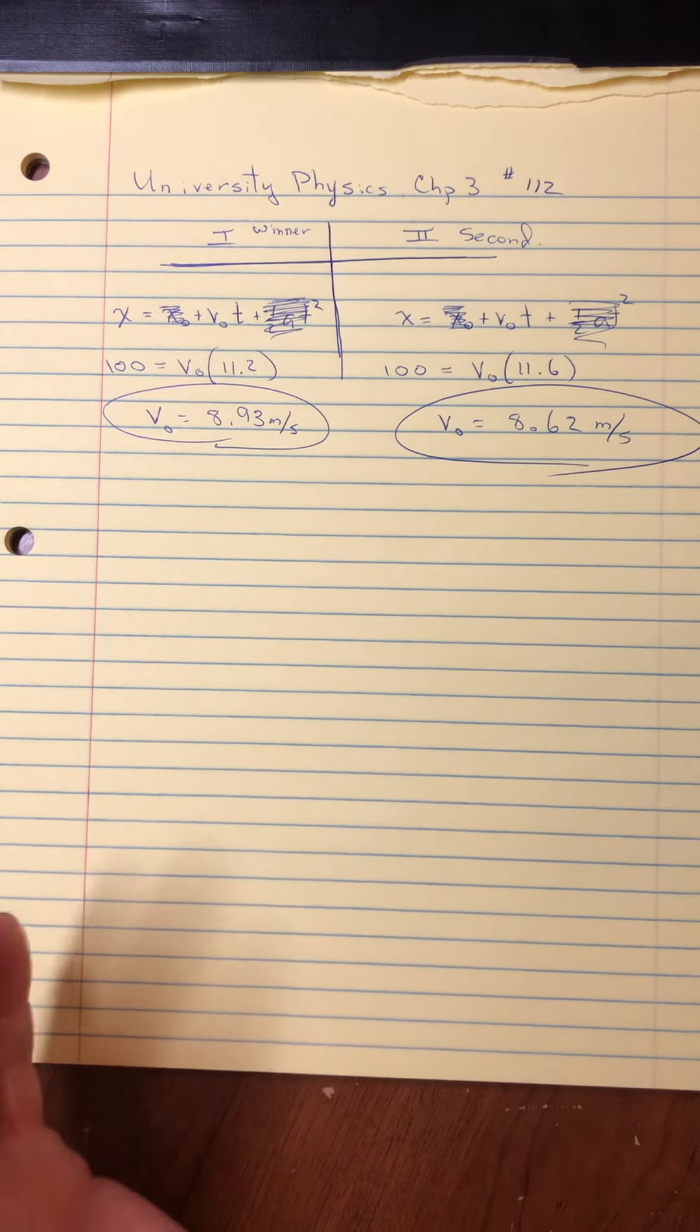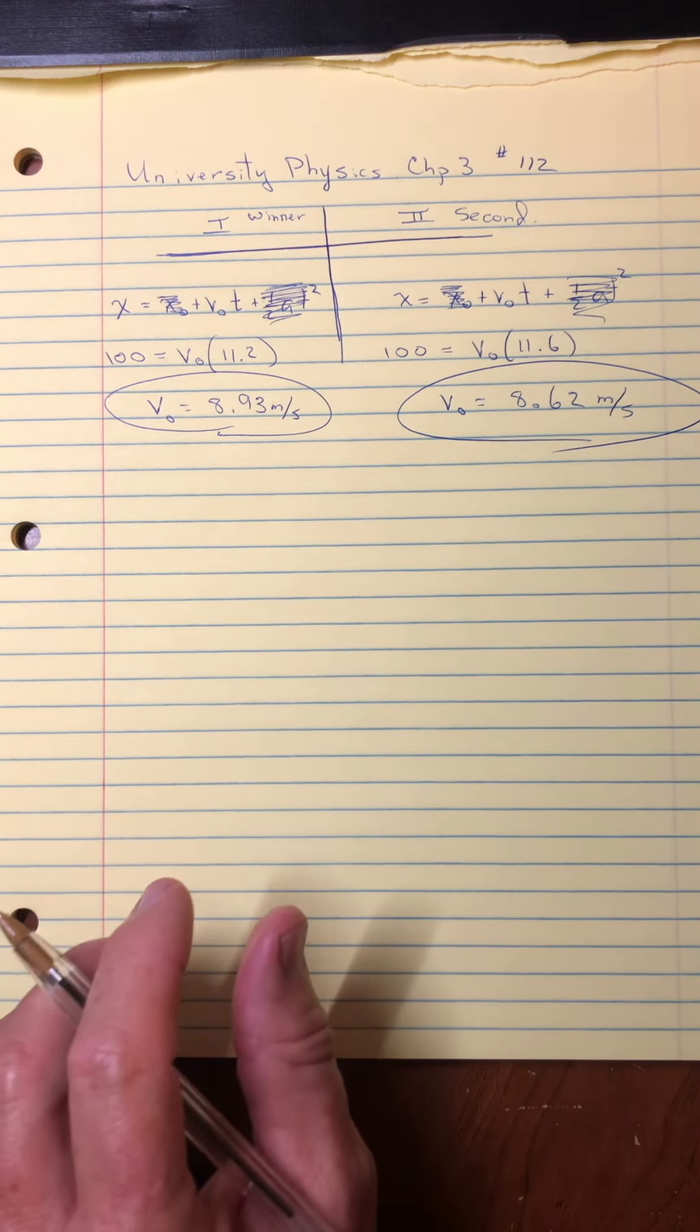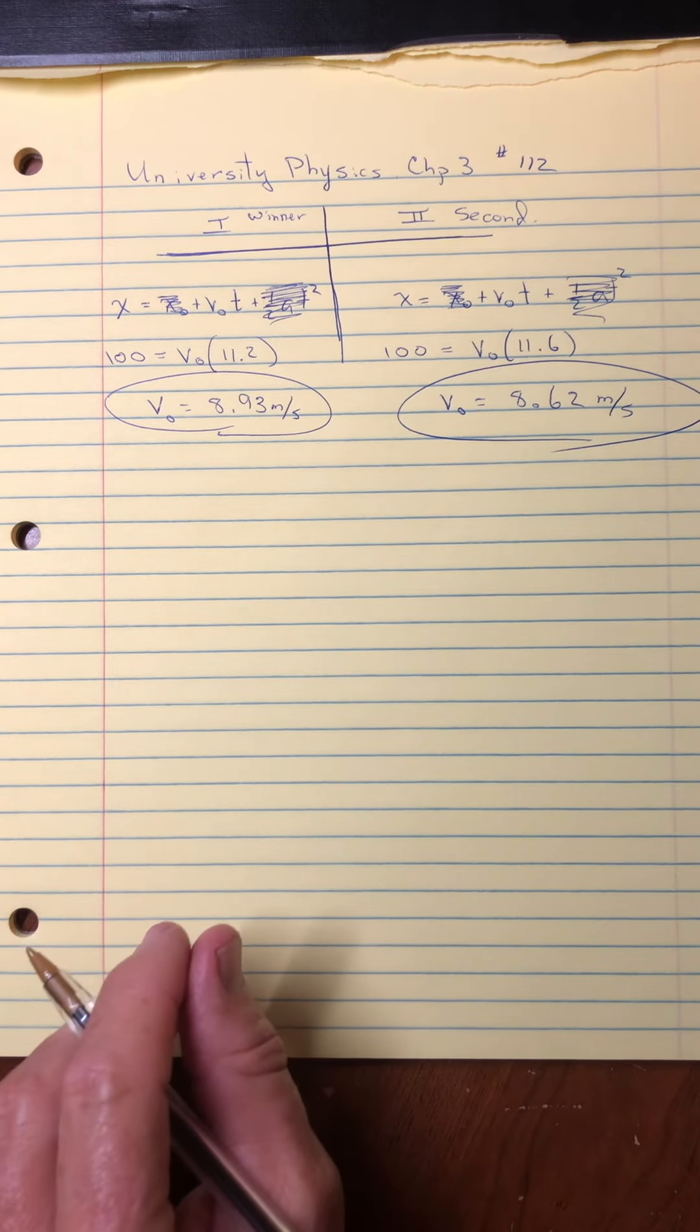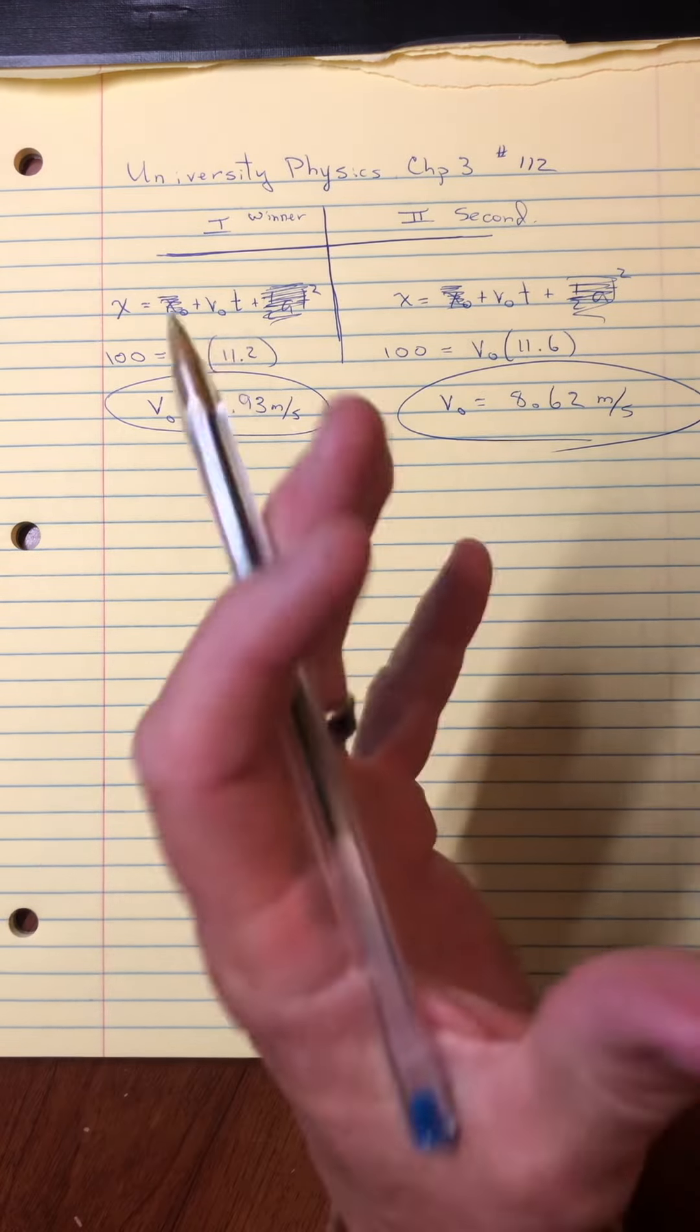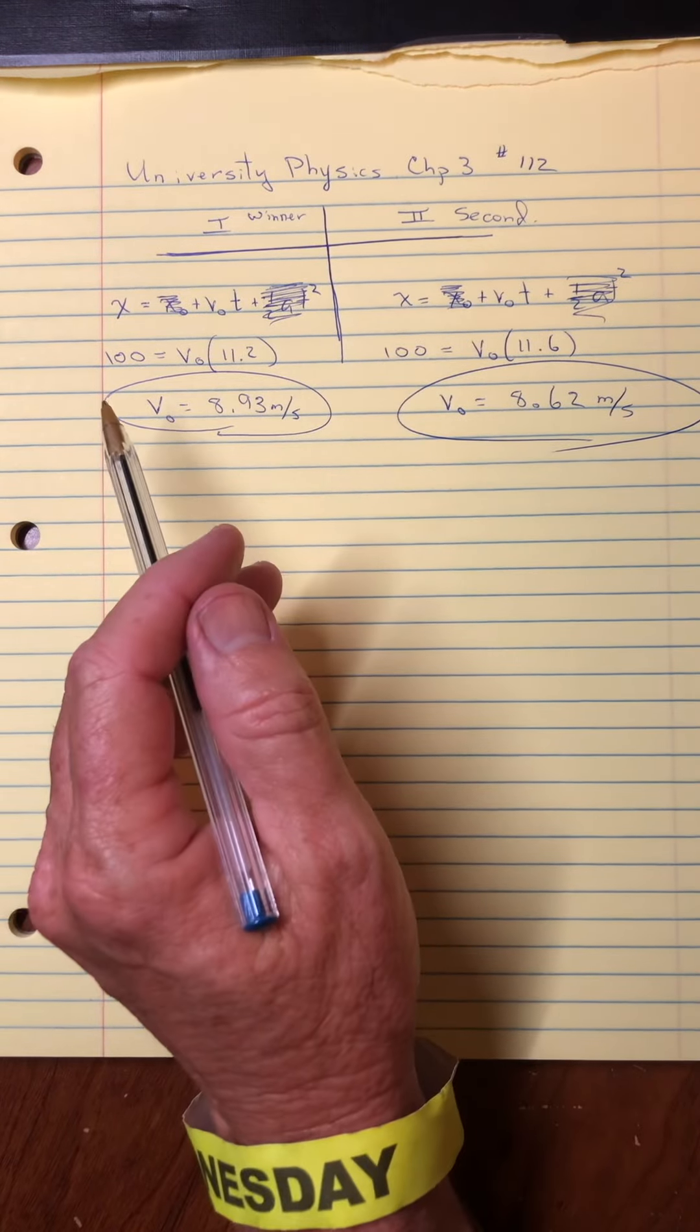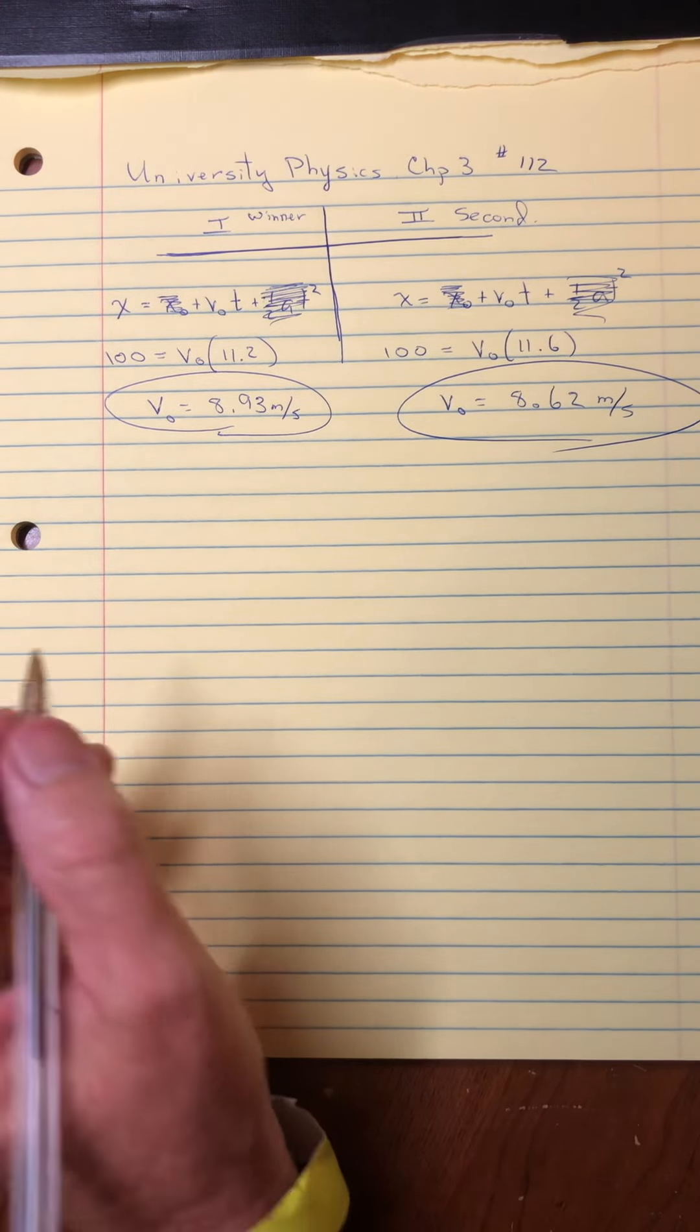Now, keep in mind what we're after. What we're after is how far is the second place finisher behind the winner? Now, I'm sure this is under this category of challenging problems because we've got to keep track of the two people.